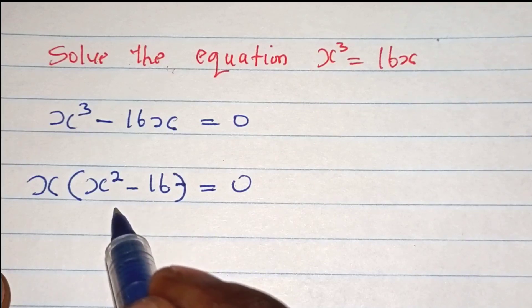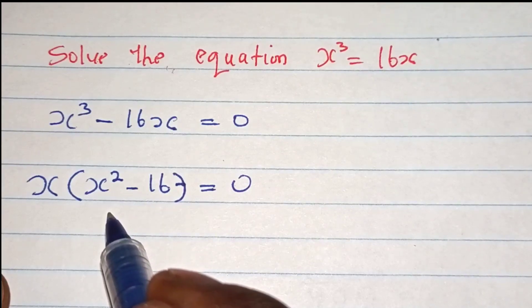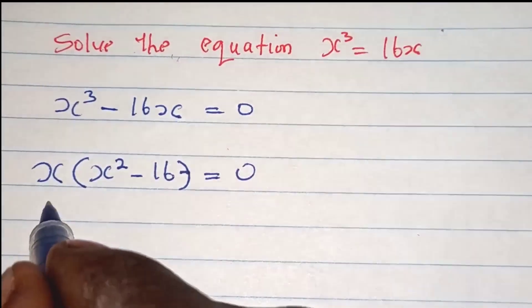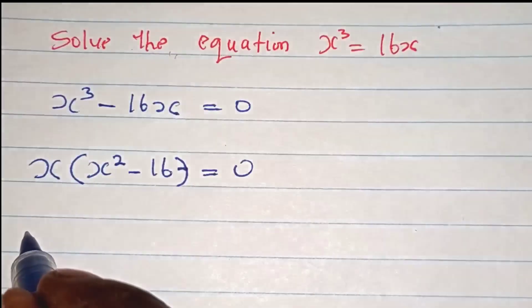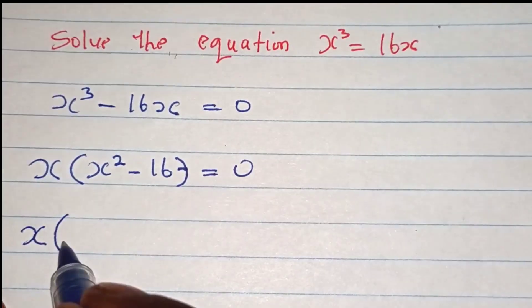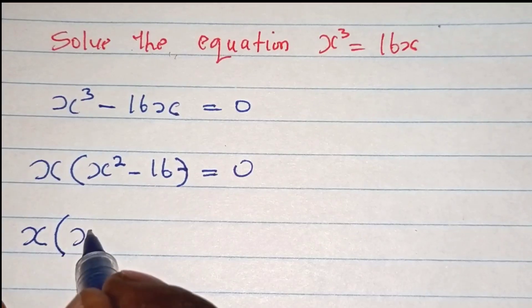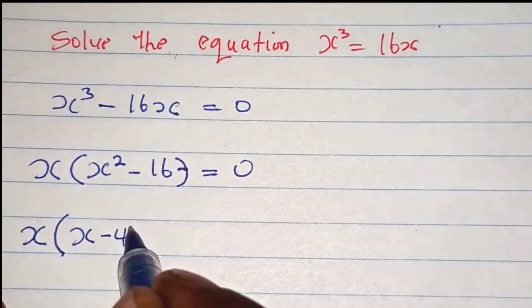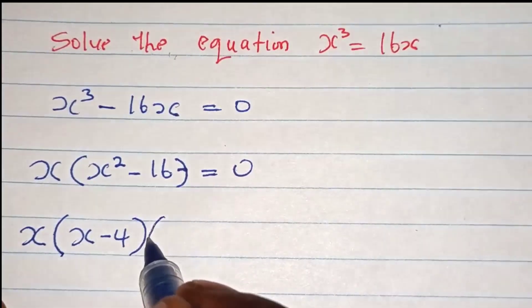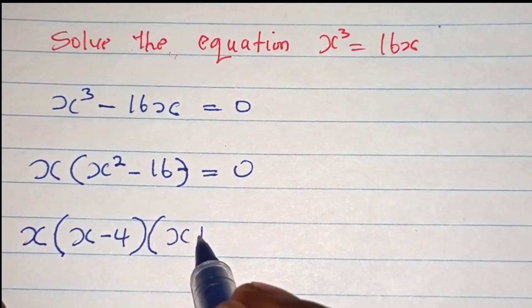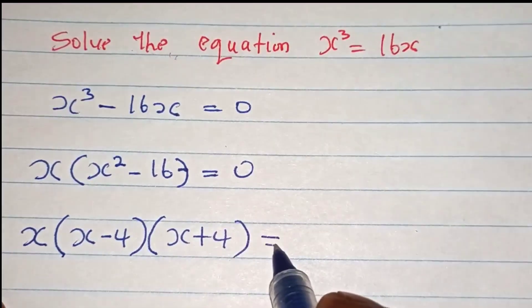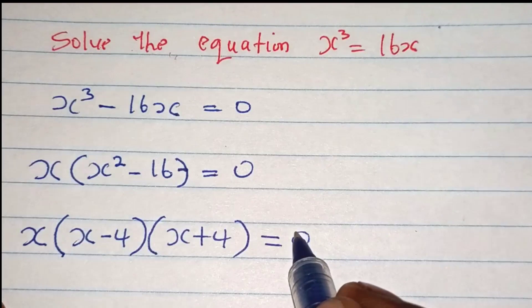We can further factor the expression x squared minus 16 using the difference of two squares method. This gives us x in bracket x minus 4, x plus 4, which is also equal to zero.